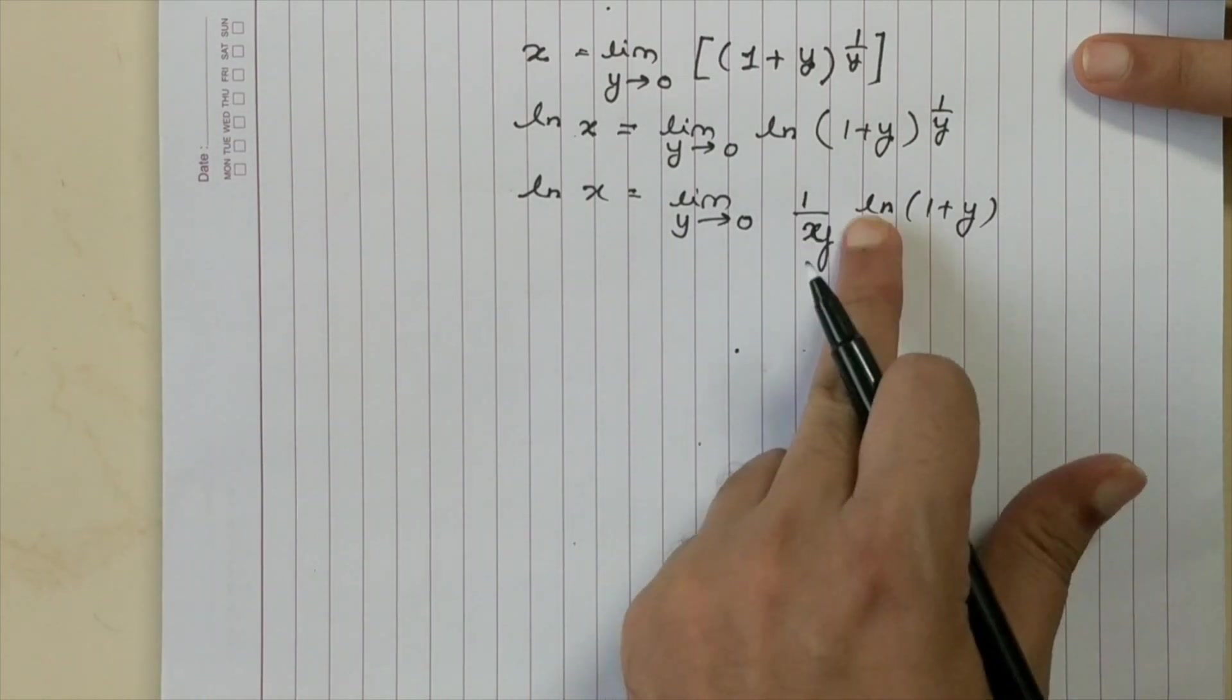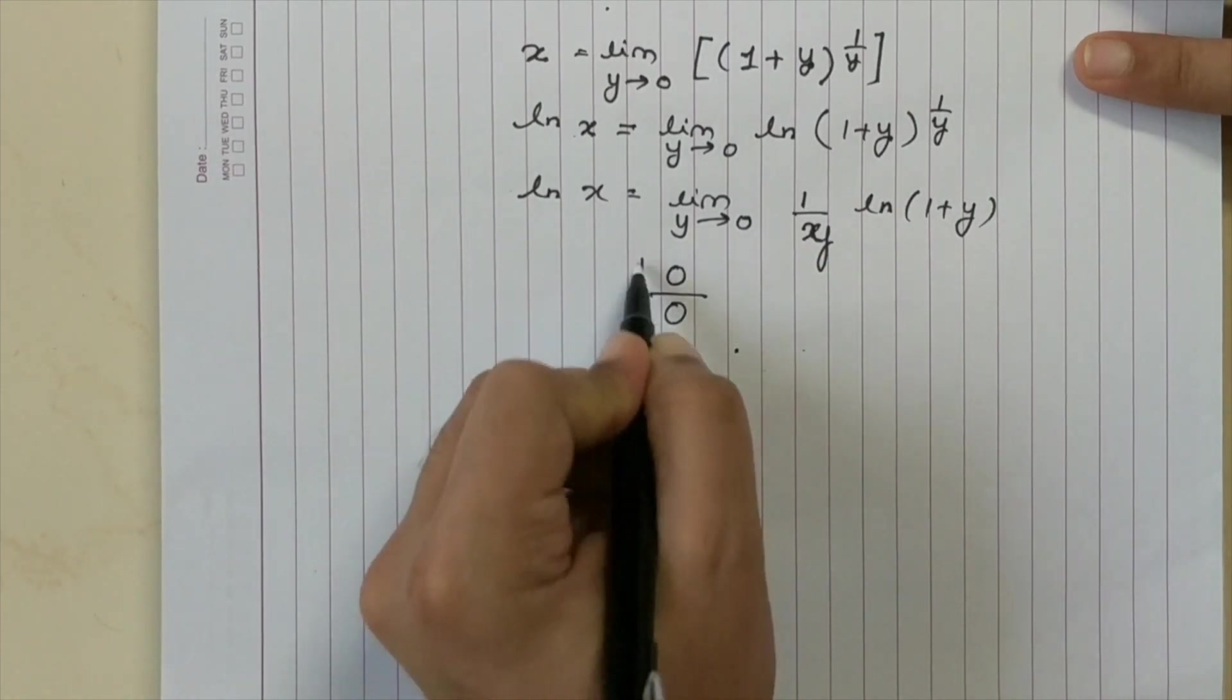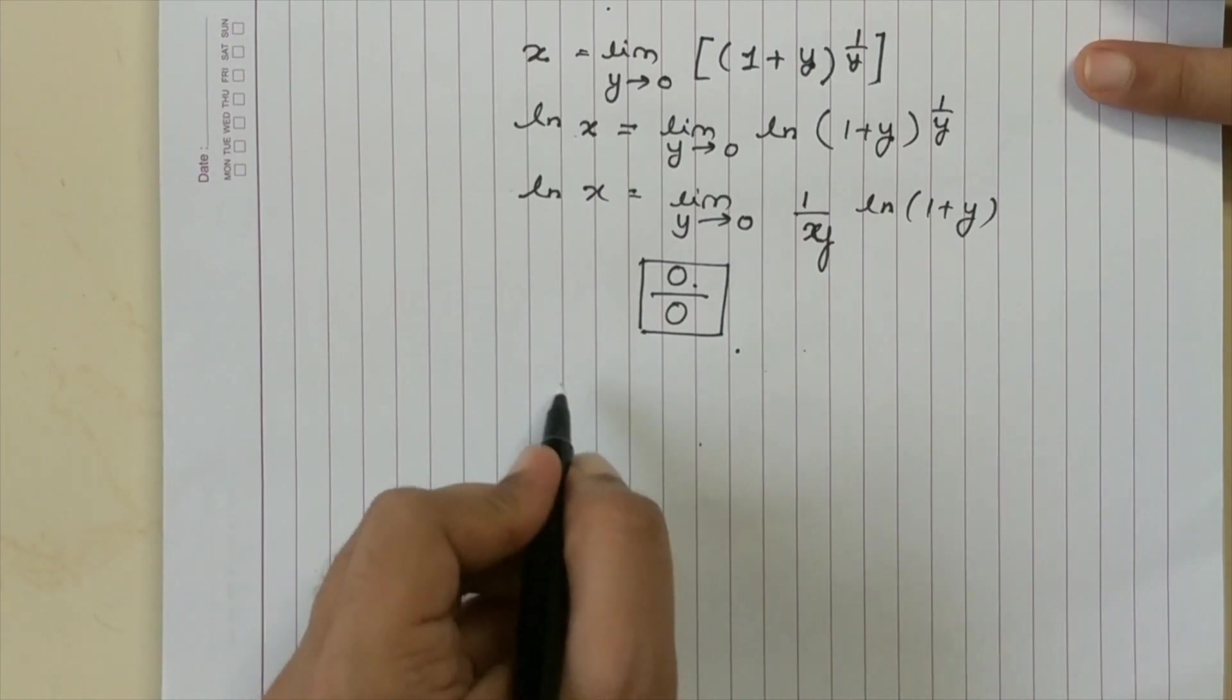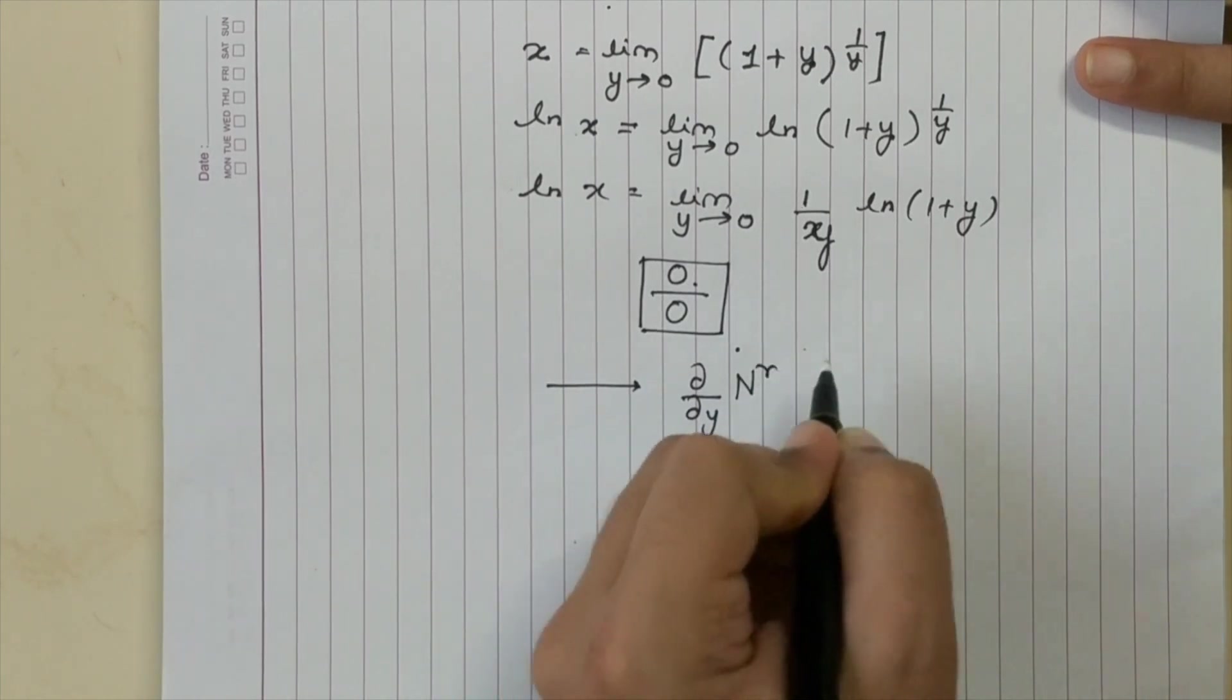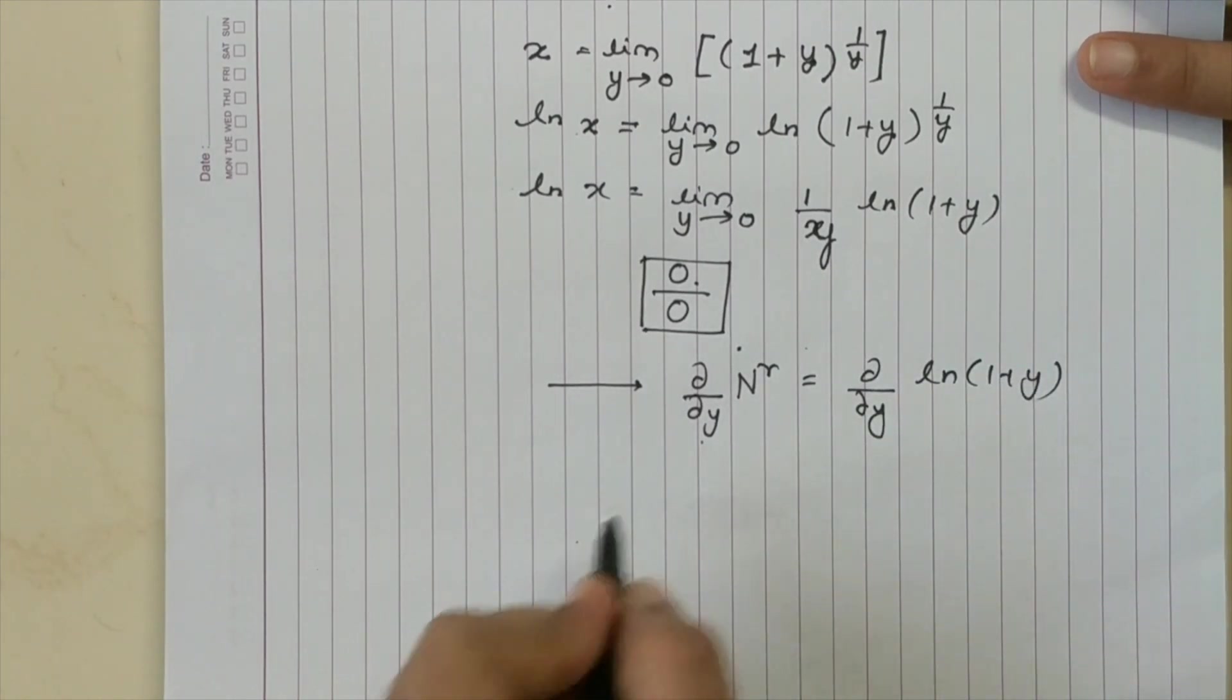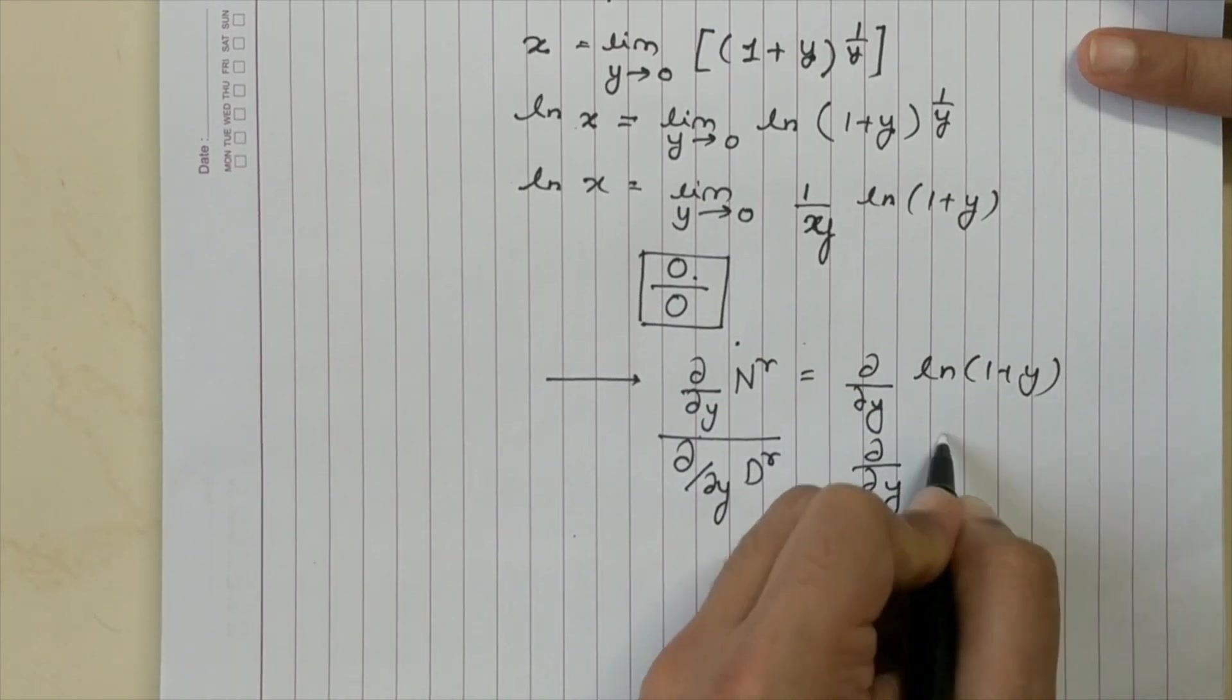As Y tends to 0, ln of 0 and Y, the denominator is also 0. So you have a 0 by 0 limit now wherein you can differentiate the numerator and differentiate the denominator. So what I can do is I can say d by dY of the numerator which is d by dY of ln 1 plus Y divided by d by dY of the denominator which is d by dY of Y.